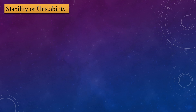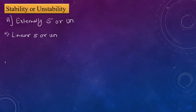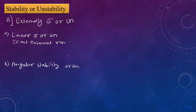Stability or instability — there are three types. The first one is externally stable or unstable. For external stability, there are two conditions: linear stability or instability, and angular stability or instability. In case of linear stability, if all external reactions are parallel to each other, then the structure is externally unstable. If all reactions are not parallel to each other, then that structure is externally stable.